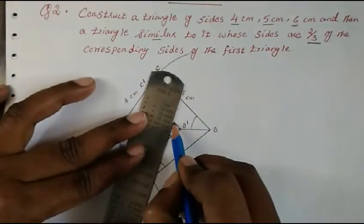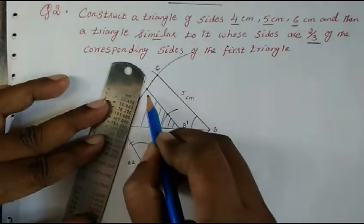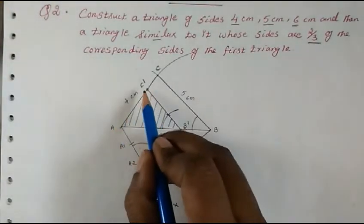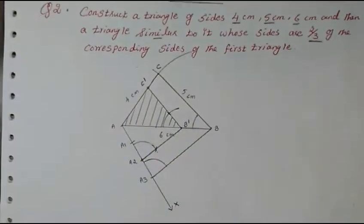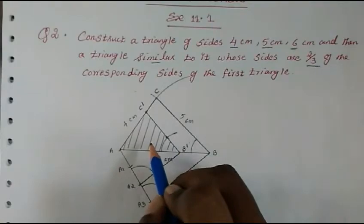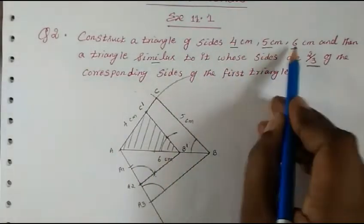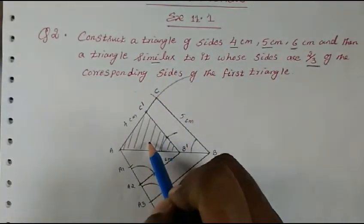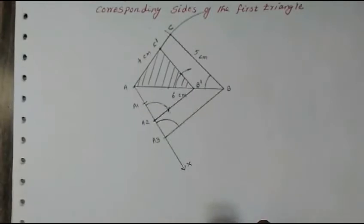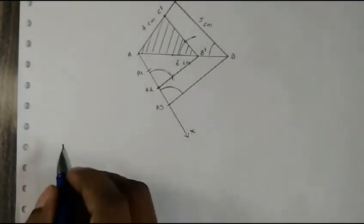So this is the triangle we have just constructed — a similar triangle of ratio 2/3 of the sides of the given triangle, with vertices A, B dash, and C dash. As I mentioned in the introduction, when the numerator is smaller, the triangle you construct will be smaller and will come inside the original triangle, because the numerator is small.